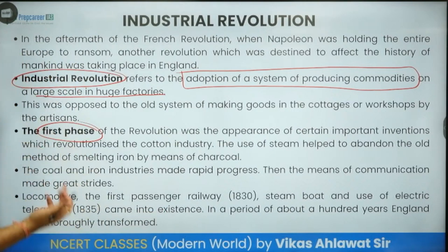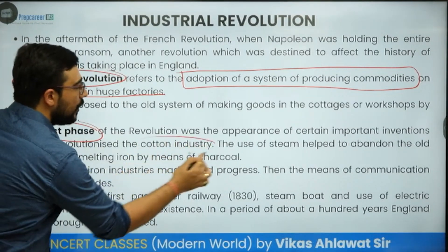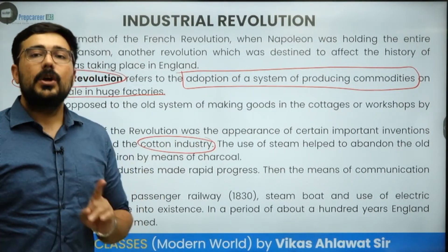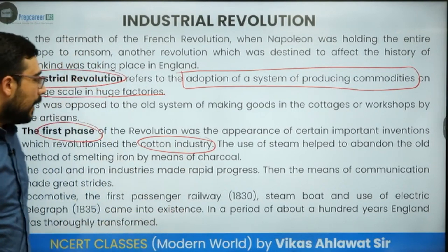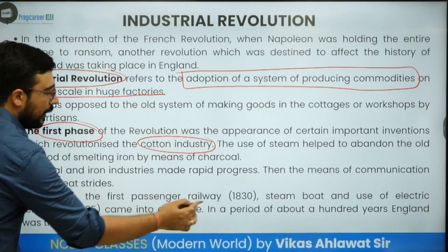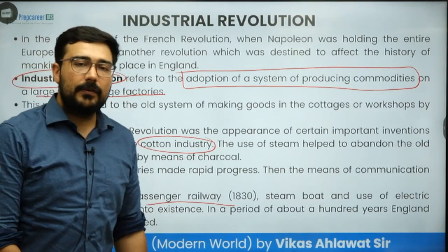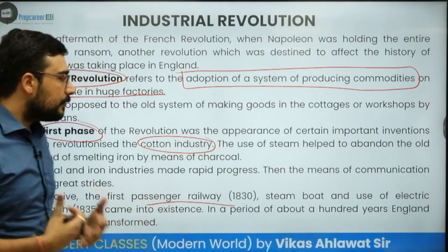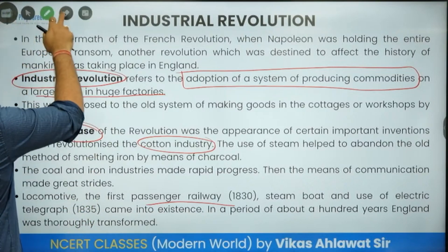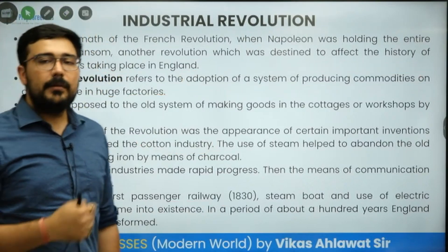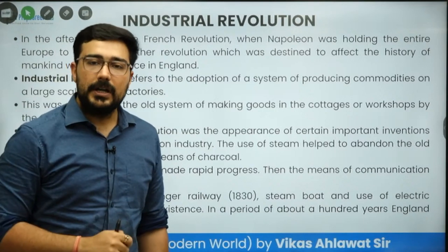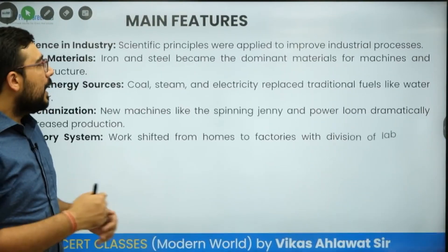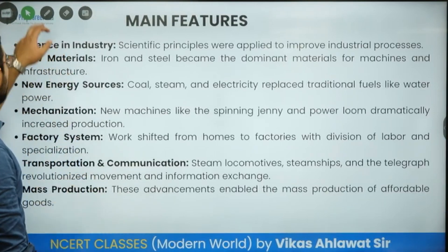The first phase of industrial revolution was led by which industry? Cotton. Maximum innovation happened in cotton. Later on, the second industrial revolution was led by iron. Iron became very popular, various kinds of processes were utilized, and large-scale production of iron helped in the rise of infrastructure in countries. Cotton was very important for the first industrial revolution, and later we see the rise of other specific features.